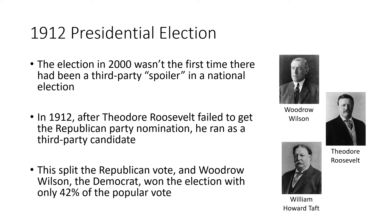Going back further to 1912, the 2000 election wasn't the first time there had been a third-party spoiler. After Theodore Roosevelt failed to get the Republican Party nomination, he decided to run as a third-party candidate. Republicans split between William Howard Taft, the official Republican nominee, and Theodore Roosevelt, and as a result Woodrow Wilson ended up winning. That's an example of what we call the spoiler effect, which we're going to talk more about as we go forward in this section.